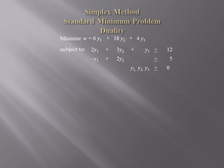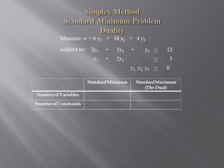Since we know how to solve standard maximum problems, our goal will be to transform this standard minimum problem into a standard maximum problem. We'll show you how you can get the solution to the standard minimum from the solution to the standard maximum. The standard maximum problem that we will be setting up will be called the dual of the standard minimum problem.